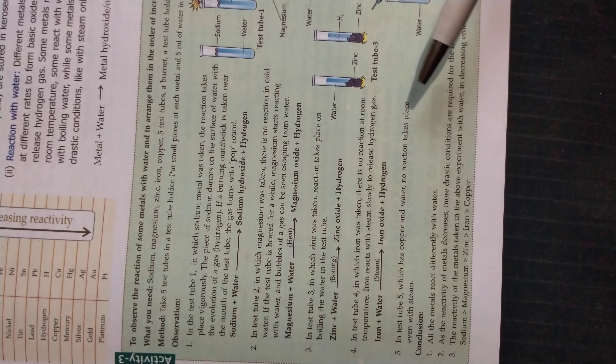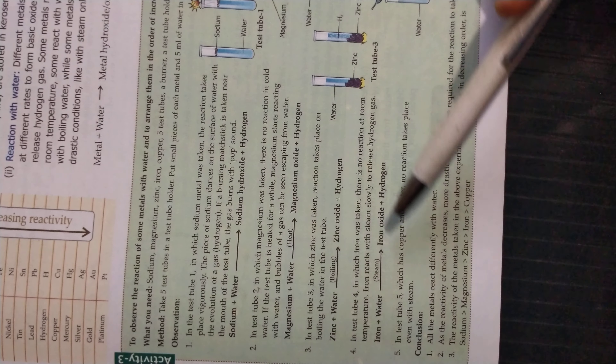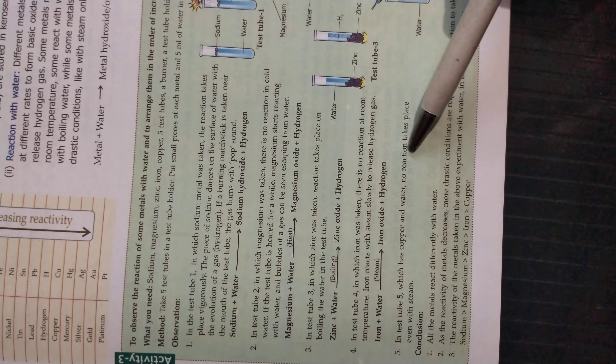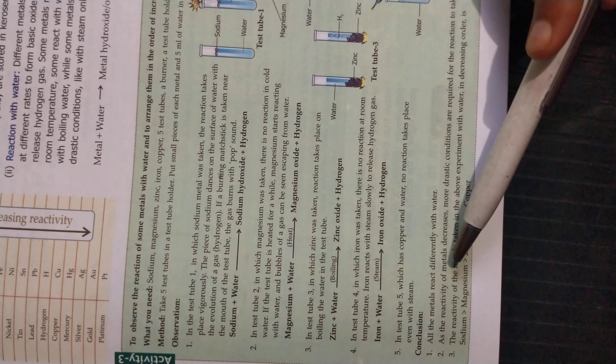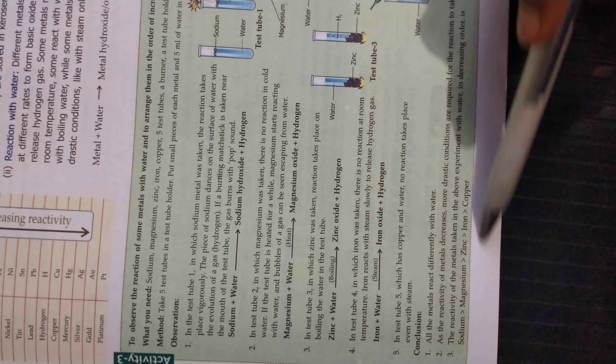Up to iron, metals react with water in various forms. However, copper, gold, platinum, and silver do not react with water readily — even at high temperatures or when water is in the form of steam. In conclusion, as reactivity decreases, the reaction with water also decreases. The order of reactivity is: sodium, magnesium, zinc, iron, copper — which matches the reactivity series.